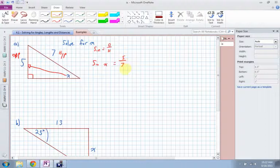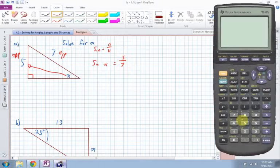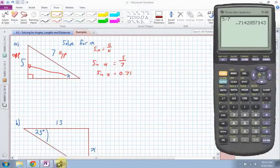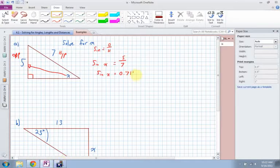First thing I need to do is I need to work out 5 divided by 7. So I go 5 divided by 7, I get 0.71. So then I know that sine x is equal to 0.71, we'll say 0.714.